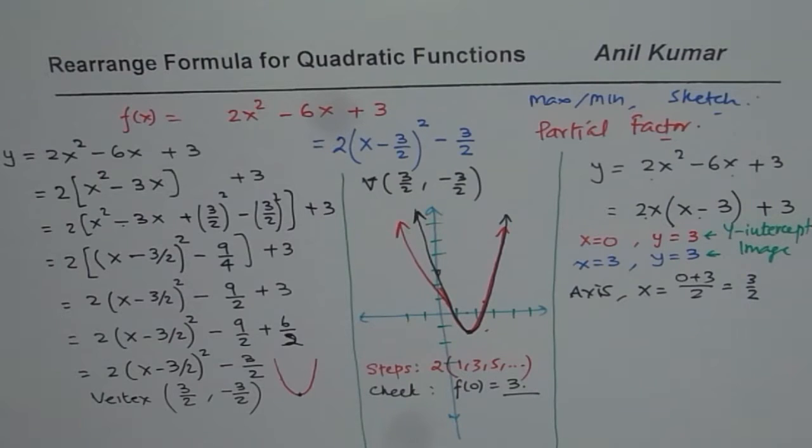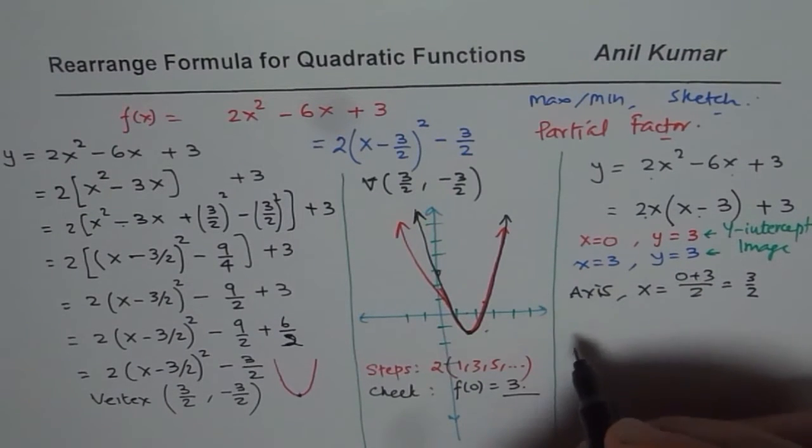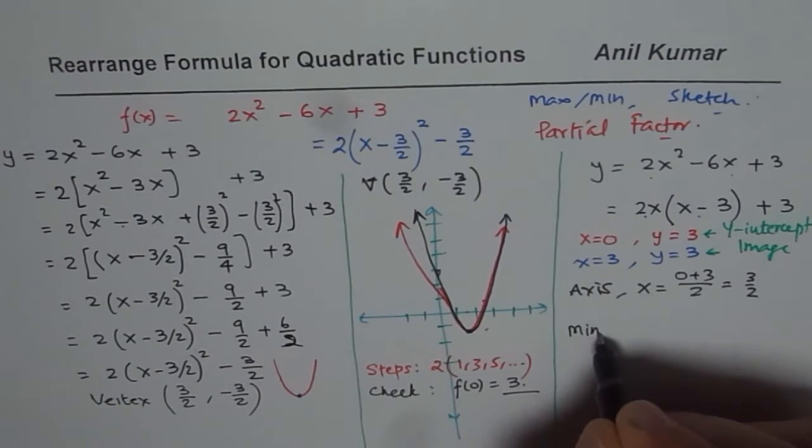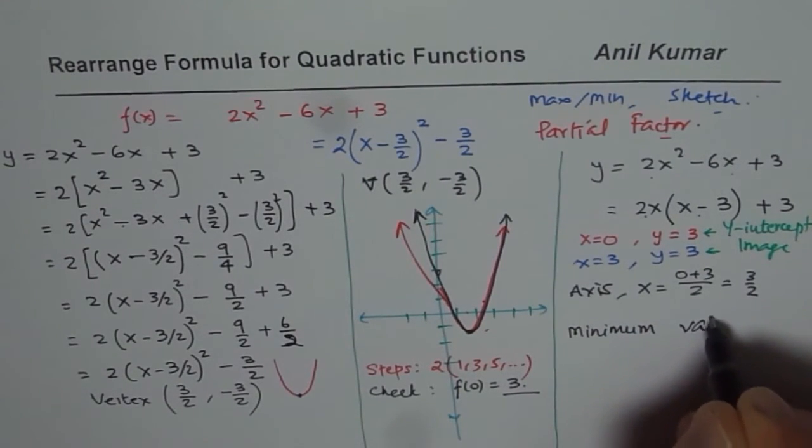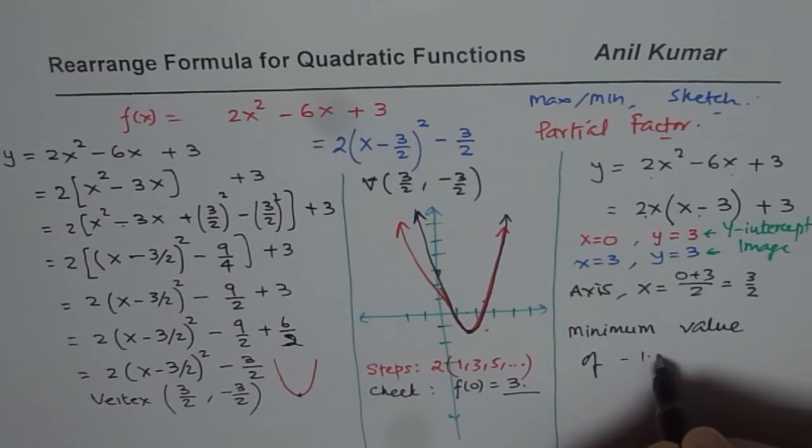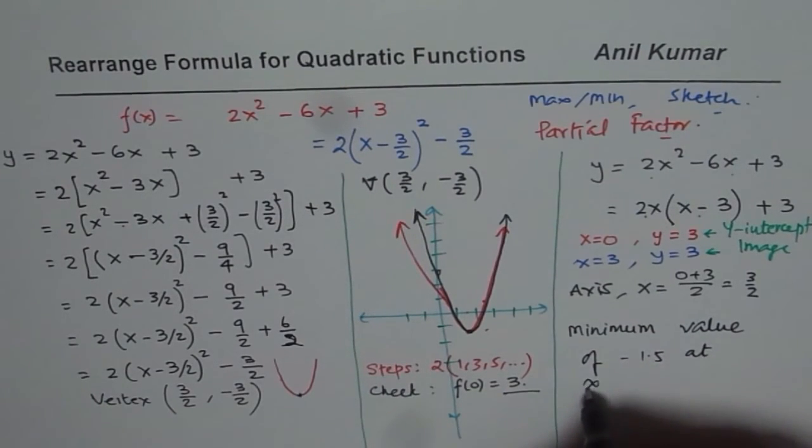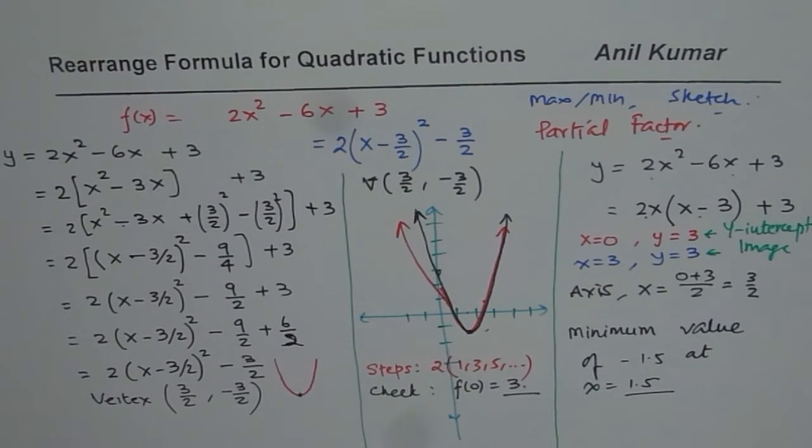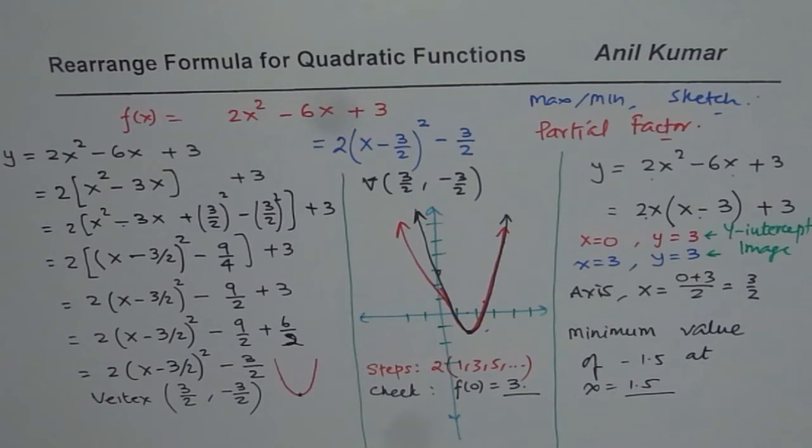I hope all these things bring our learnings together and helps you to understand how we could rearrange our quadratic equation. Find maximum or minimum. In this case, since it opens upwards, we have minimum value of minus 1.5 at x equals to 1.5. So, that is how we could actually summarize these particular learnings. But I hope it gives you an insight of how to work with quadratic functions. Thank you, and all the best.